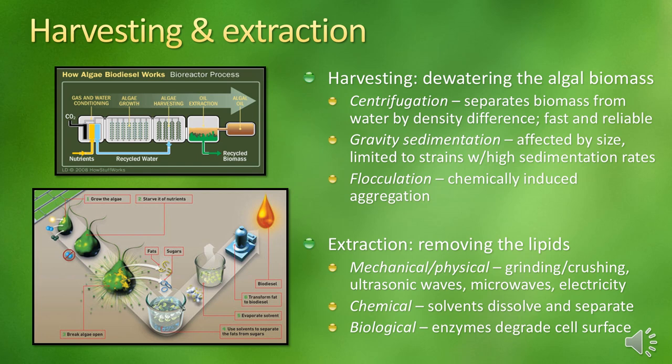Extraction means separating the lipids from the cells, requiring the cell to be broken open by various methods. Mechanical extraction uses physical means like grinding or crushing, also known as bead beating, where algal slurry is spun at high speeds with fine beads to damage the cell. Ultrasound uses wave action to disturb the cell wall; microwaves heat the cell and induce intracellular water vapor to disrupt it from within. Electroporation uses electricity to alter the conductivity and permeability of the cell wall. These mechanical methods generally involve high capital and maintenance costs, require skilled personnel, and can produce inconsistent lipid yields.